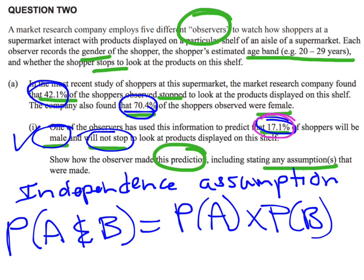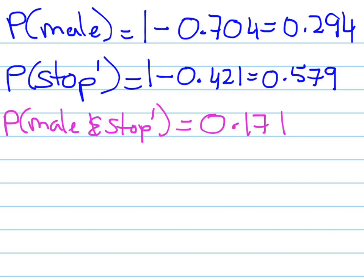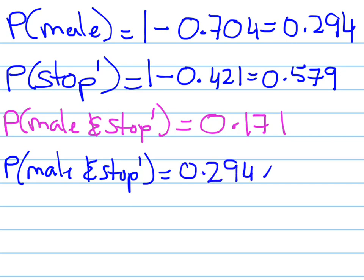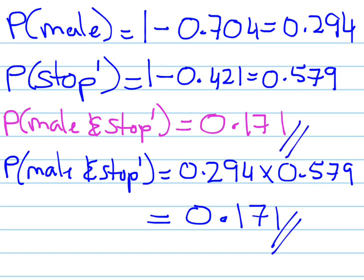So let's take our information and see if that works out using our independence assumption rule. The independence assumption says if probability of A times probability of B is equal to the probability of A and B, then it's independent. So we're going to do the probability of male and not stopping, which is 0.294 times 0.579. And when we multiply those together, they get a value of 0.171.